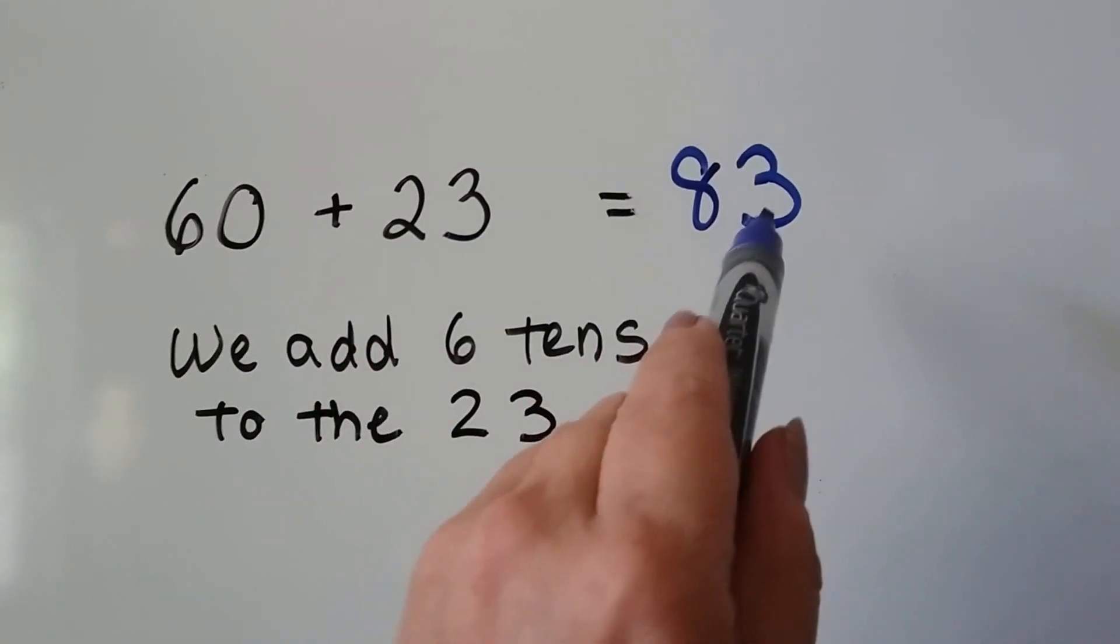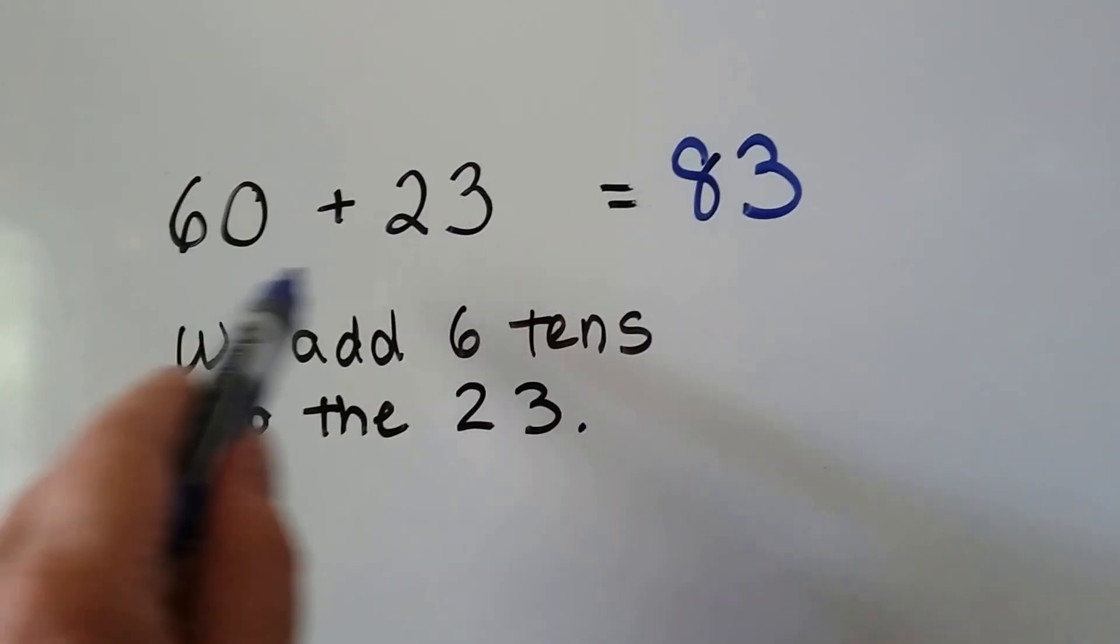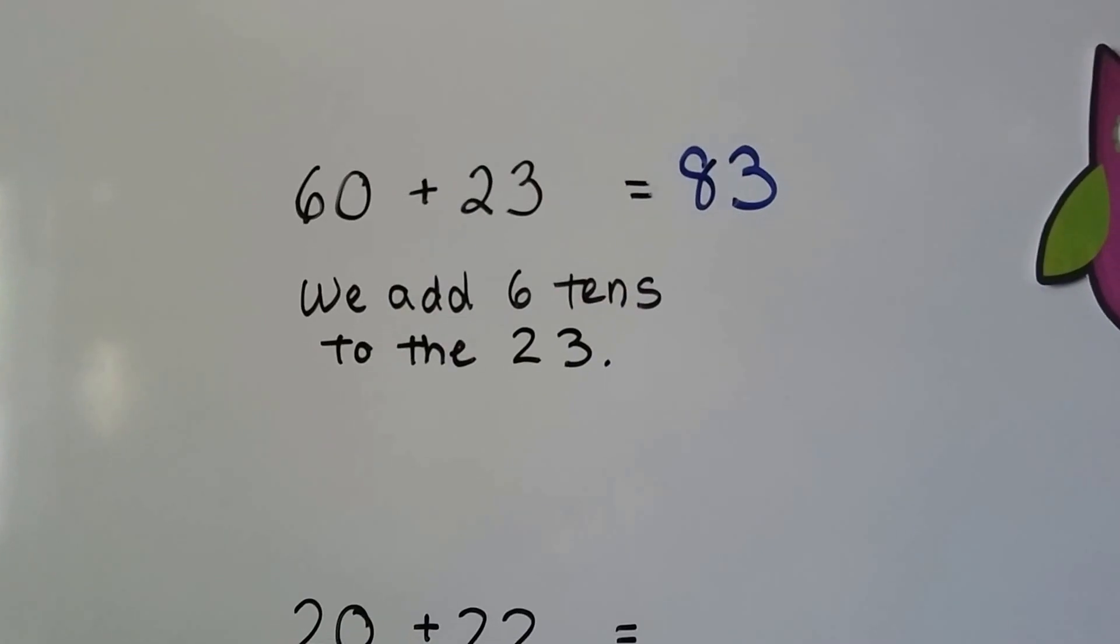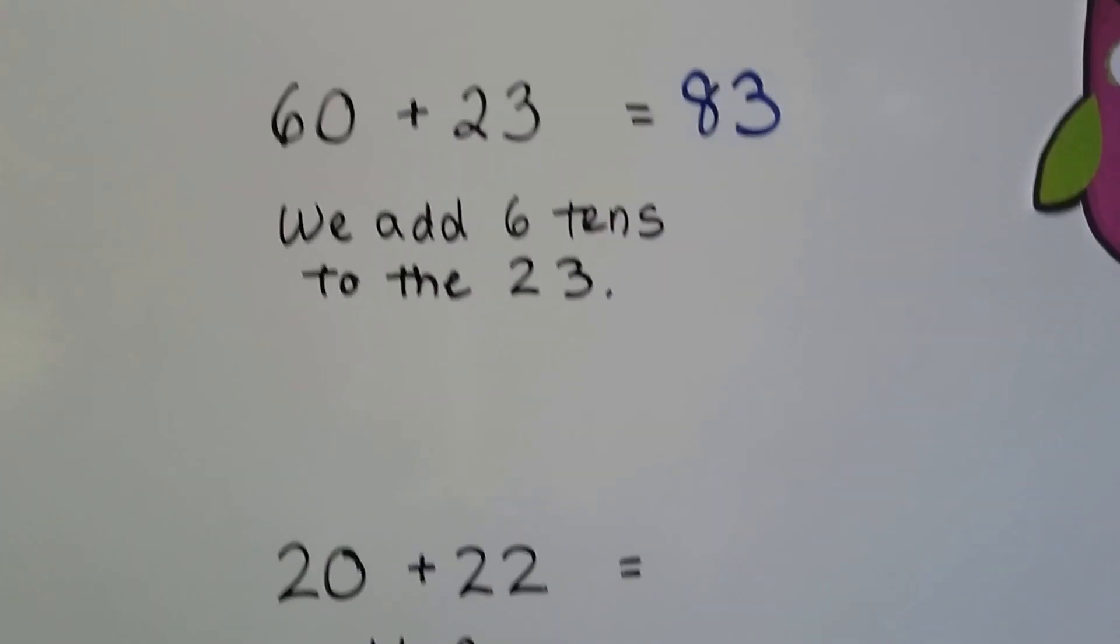When we add the ones place, it's a three. When we add the tens place, six, seven, eight, it's an eight. And when we counted by tens, we got 83. Let's try it again.